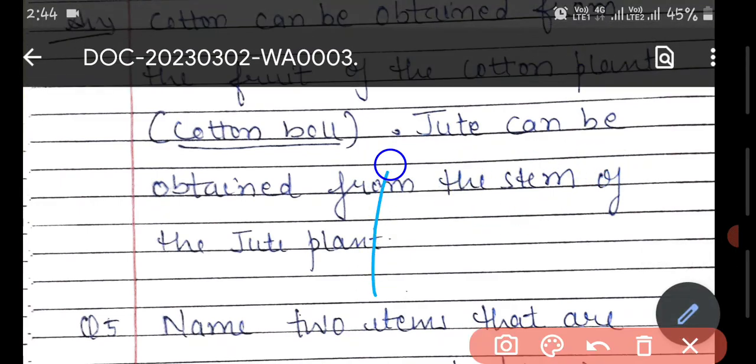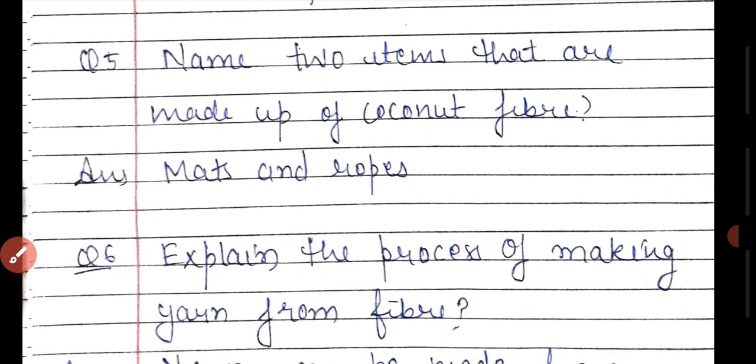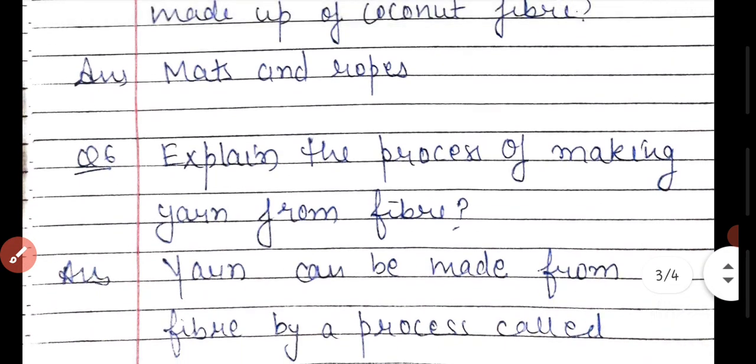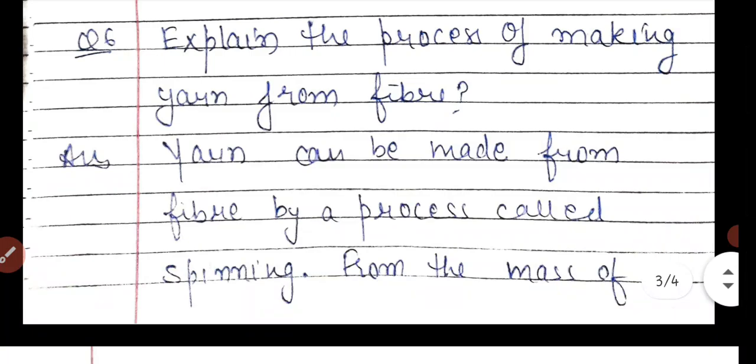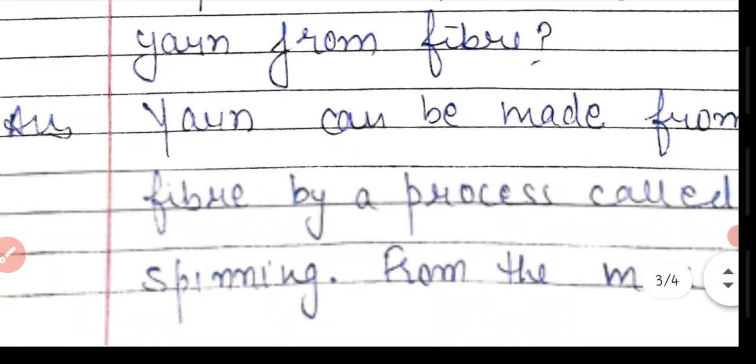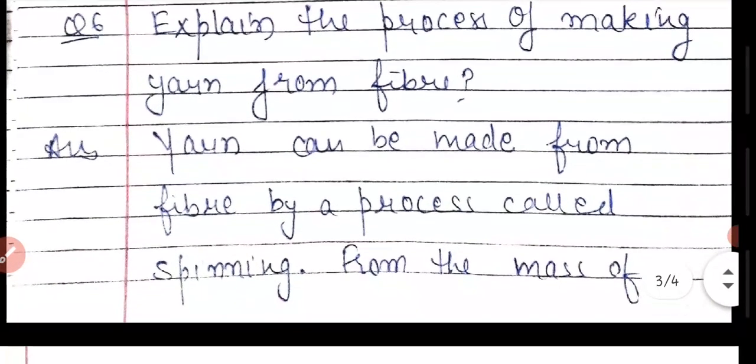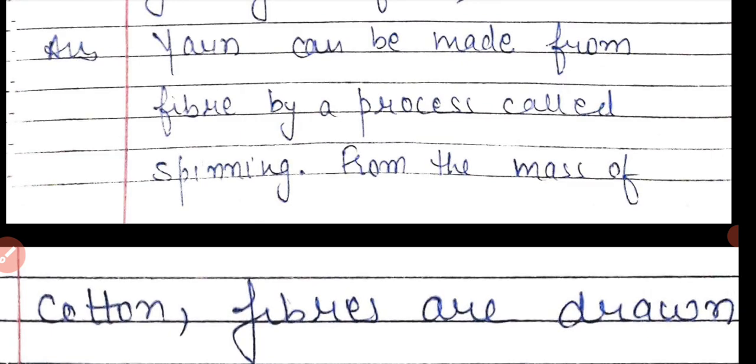Name two items that are made from coconut fiber. Mats and ropes are made from coconut fiber. Next question: Explain the process of making yarn from fiber. Yarn can be made from fiber by the process of spinning.